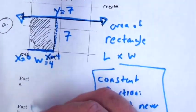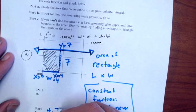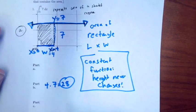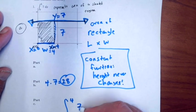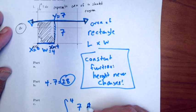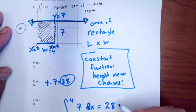Four times seven, which is 28. And I could make the statement: the integral from zero to four of the constant function seven is equal to 28.